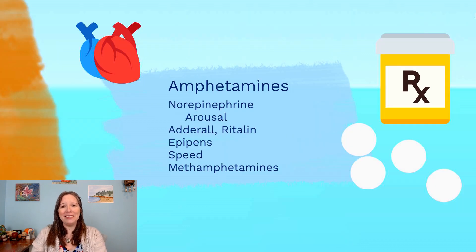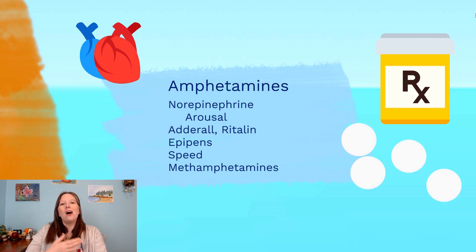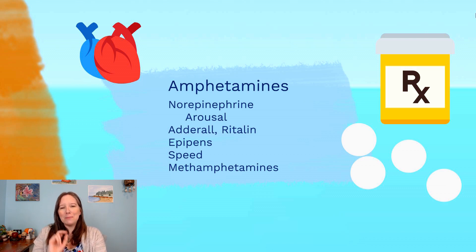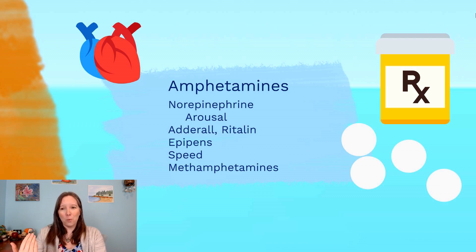Next, we'll talk about amphetamines, which come in lots of different varieties. What is common amongst all of them is they are very good at mimicking norepinephrine. Most will also mimic serotonin and dopamine — almost all recreationally used psychoactive drugs mimic dopamine to some extent. But what's especially important about amphetamines is how they mimic norepinephrine, making us feel more aroused. Norepinephrine is the physiological arousal neurotransmitter, so our brain gets flooded with a chemical that makes us feel very awake.